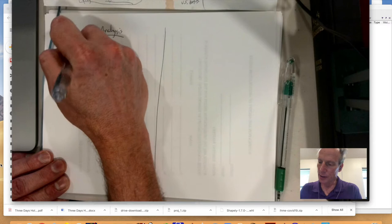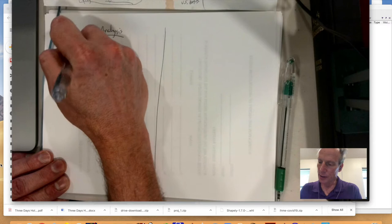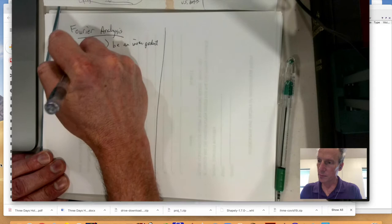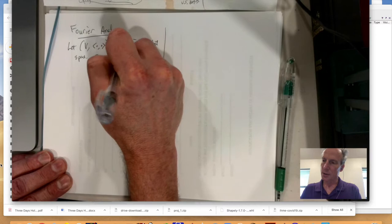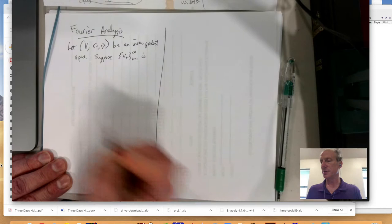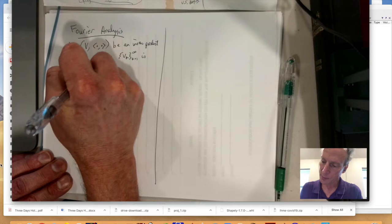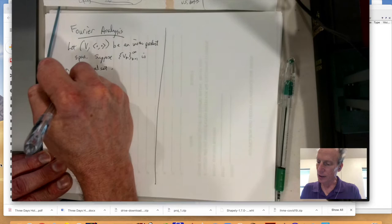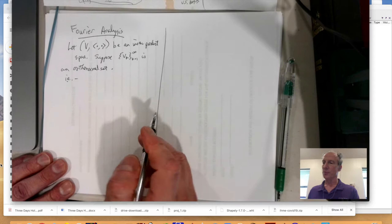Well, so we start with let V with an inner product be an inner product space. Suppose VK from K equal 1 to infinity is an orthonormal set of vectors. What that means is that if you take the inner product with any of these guys, it's either going to be 1 or 0.